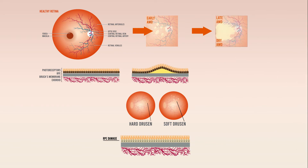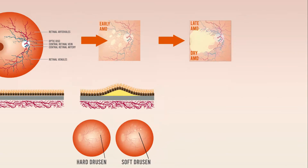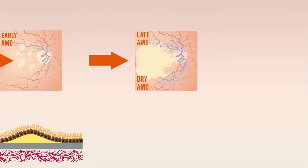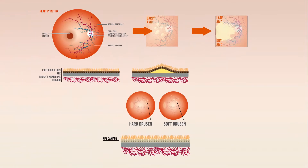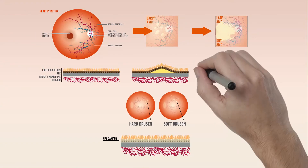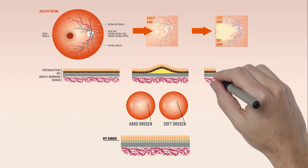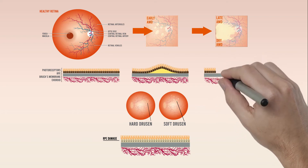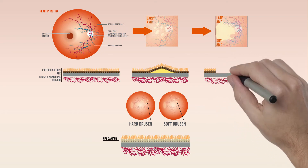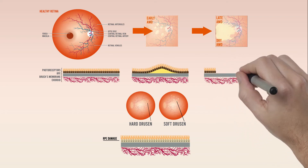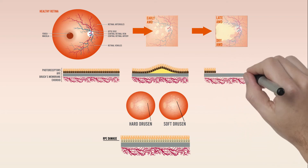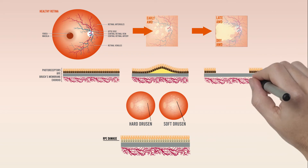Some patients will progress from early AMD, where vision is not significantly impaired, to advanced AMD, where vision begins to deteriorate. Advanced AMD comes in two forms: dry and wet neovascular. In dry AMD, which in its advanced form is also called geographic atrophy, regions of RPE cell atrophy develop.